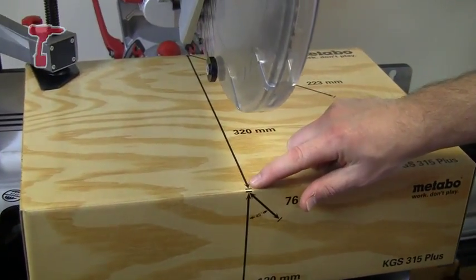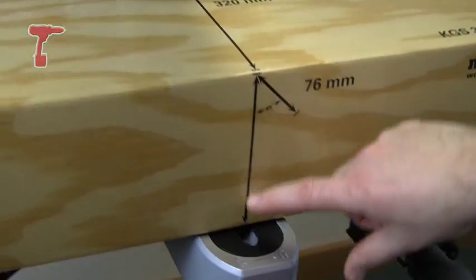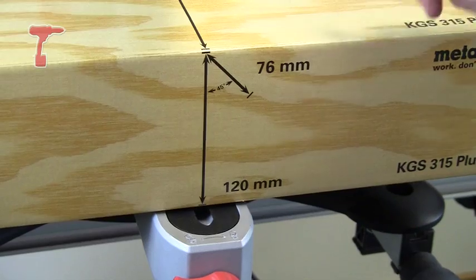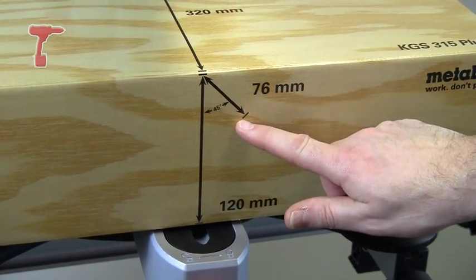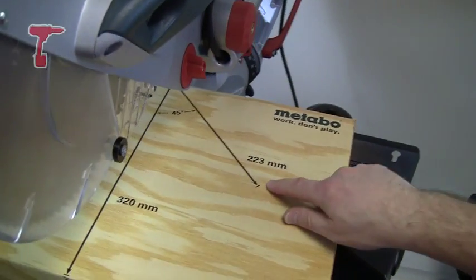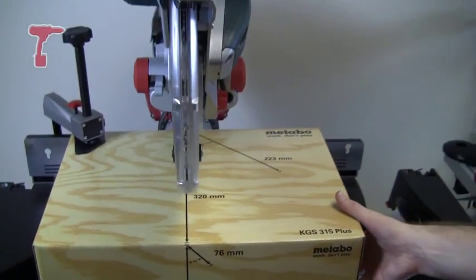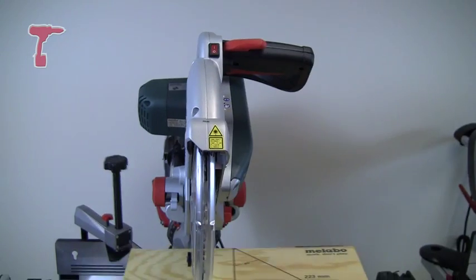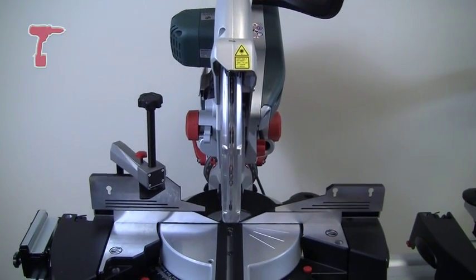320mm when you slide it. It's going to do 120mm high, on the bevel it's going to do 76mm at 45 degrees, and on the mitre it's going to do 223mm at 45 degrees. Some pretty impressive capacities there on this saw.